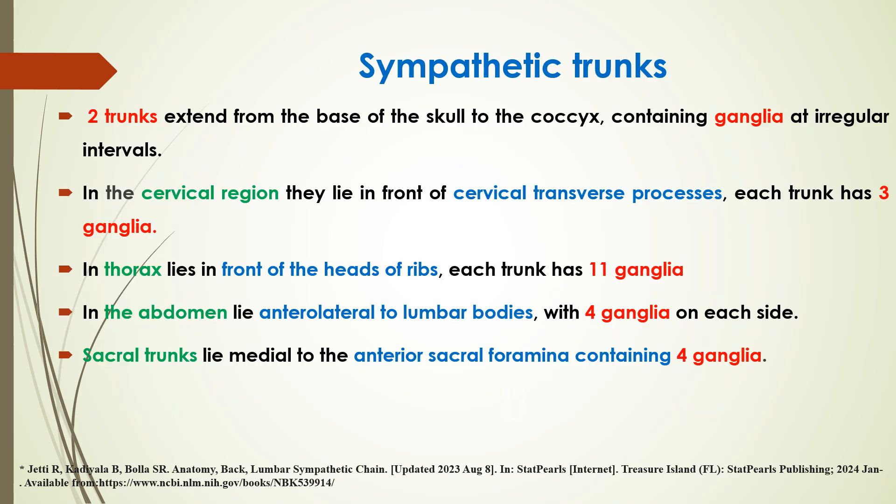The sympathetic trunk extends from the base of the skull to the coccyx, containing ganglia at regular intervals on each side. In the cervical region, they lie in front of the cervical transverse processes, with three ganglia per trunk. In the thorax, they lie in front of the head of the ribs, with 11 ganglia. In the abdomen, they lie anterior to the lumbar vertebral bodies with four ganglia each side. The sacral trunk also has four ganglia on each side.